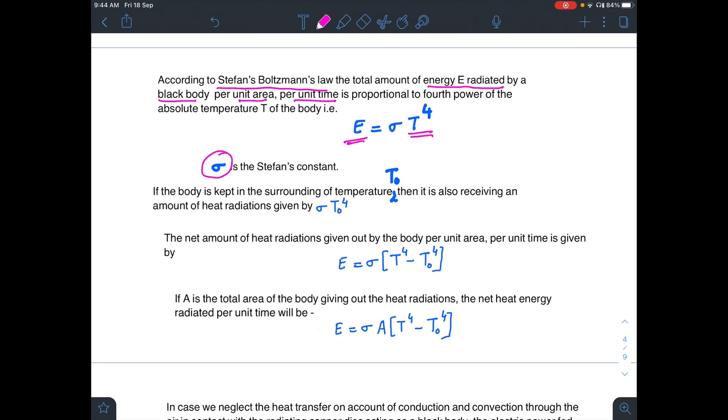Now if you place your black body in a surrounding temperature T0, then it will also be receiving heat radiations which will be given by sigma T0 to the power 4. The net amount of heat radiations given out by the body per unit area per unit time will be sigma T to the power 4 minus T0 to the power 4.